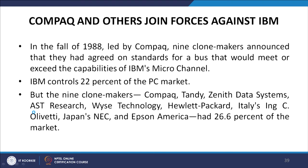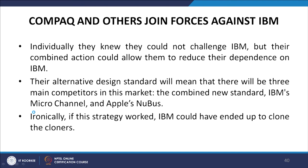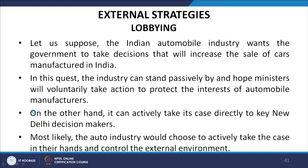However, there was another option: the clone makers could break with IBM and set their own standard. In the fall of 1988, led by Compaq, nine clone makers announced they had agreed on standards for a bus that would meet or exceed the capabilities of IBM's Micro Channel. IBM controlled 22 percent of the PC market, but the nine clone makers — Compaq, Tandy, Zenith Data Systems, AST Research, YG Technology, HP, Italy's Olivetti, Japan's NEC and Epson America — had 26.6 percent combined. Individually they could not challenge IBM, but their combined action could reduce their dependence on IBM. Ironically, if this strategy worked, IBM could have ended up cloning the cloners.